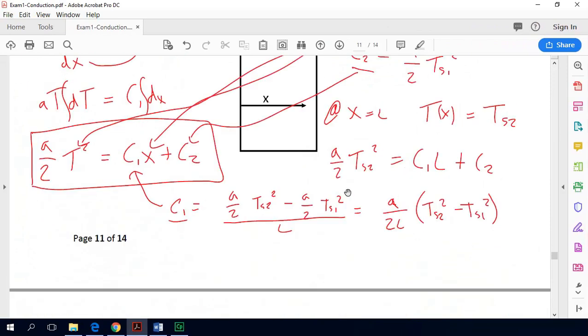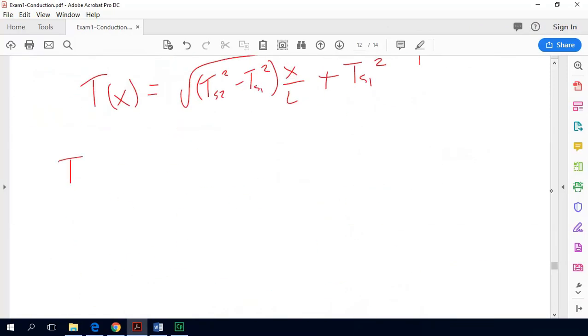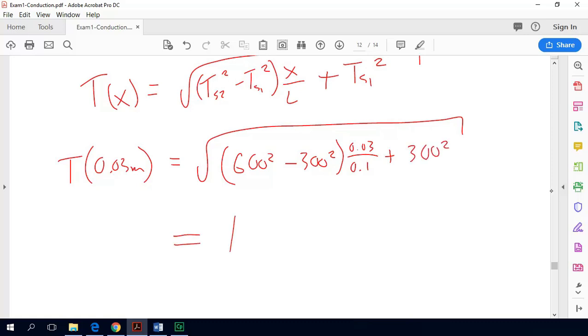So we'll go ahead and figure out the temperature at 0.03 meters. So if x equals 3 centimeters, we would just solve this equation and we would get 600 squared minus 300 squared multiplied by x over L. So this is 0.03 divided by 0.1. And then we have our Ts1 squared, which is 300 squared. So the number we get is 413.5 Kelvin.